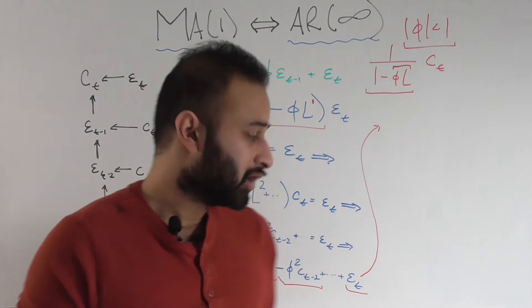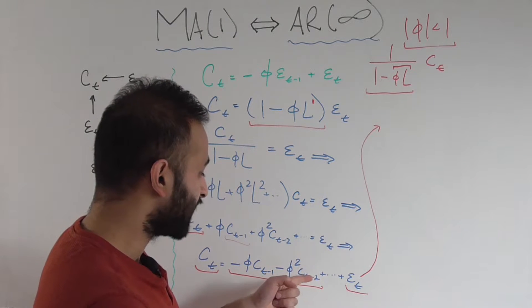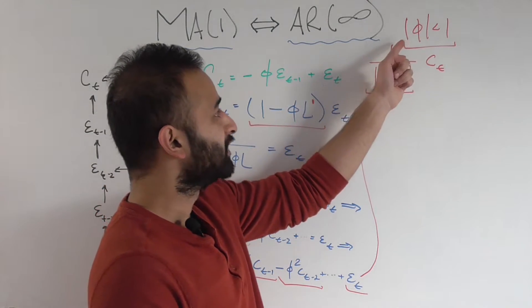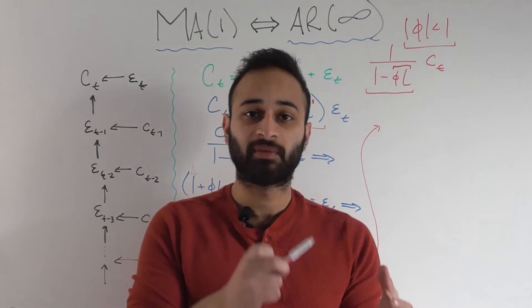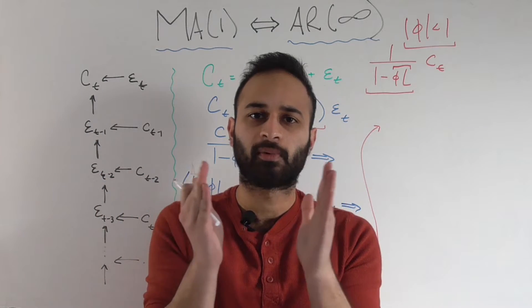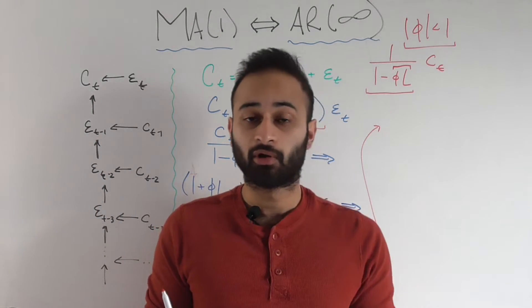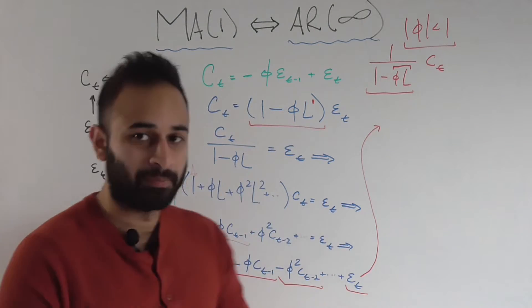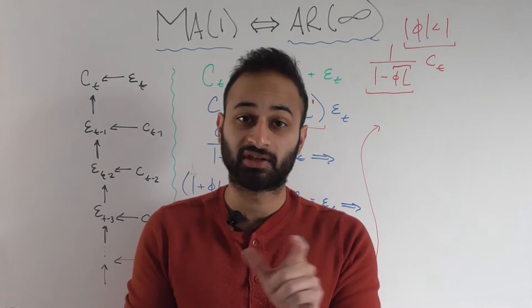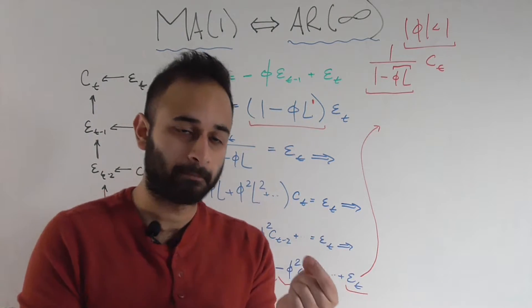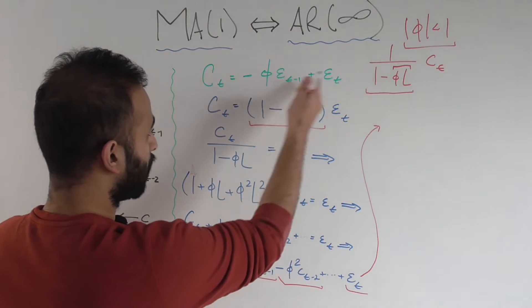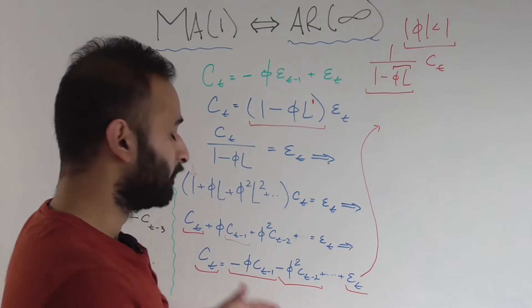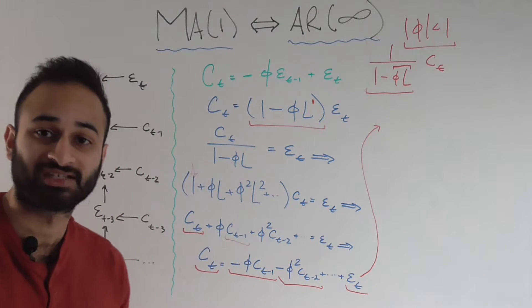But the brilliant part comes in when we see that the thing that's getting multiplied by C sub T minus K is phi to the power of K. And remember we said that phi is an absolute value less than one, which means phi to the power of K is a progressively smaller, smaller, smaller number. So in using this in a real world setting, we can kind of just shut off this whole series after a certain amount of lags, because they're going to be zero at that point, because the thing they're getting multiplied by is so puny.